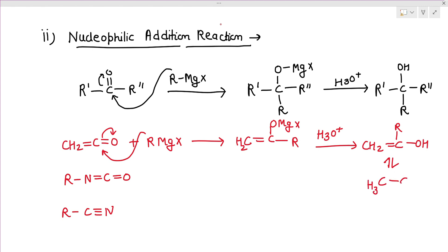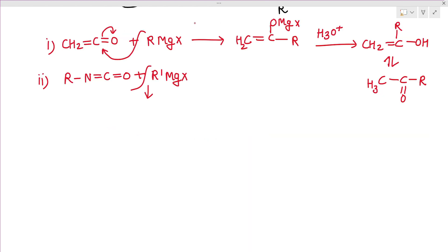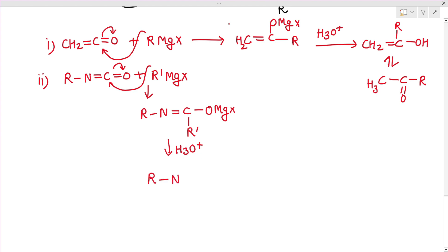The ketene product CH₂=C(R)–OH undergoes tautomerism to give CH₃–C(=O)–R (a methyl ketone). For isocyanate (R–N=C=O) reacting with R′MgX: the alkyl R′ attacks, giving R–N=C(OMgX)–R′. After hydrolysis, we get R–N=C(OH)–R′, which tautomerizes to R–NH–C(=O)–R′ (an amide).